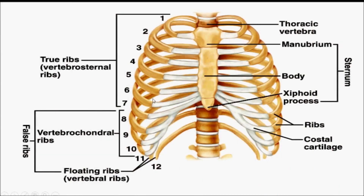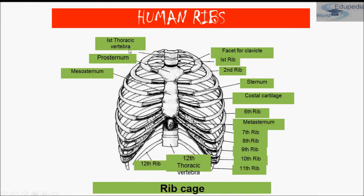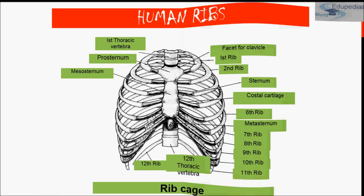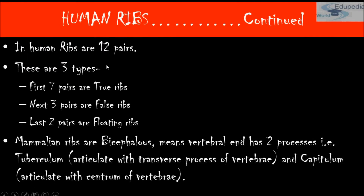The rib cage is attached to the thoracic vertebrae. The sternum runs along the ventral side. From the first to the seventh ribs they are true ribs, from the seventh to tenth they are false ribs, and the eleventh and twelfth are floating ribs. In humans there are twelve pairs of ribs — 24 total. The function of floating ribs is to protect the kidneys.